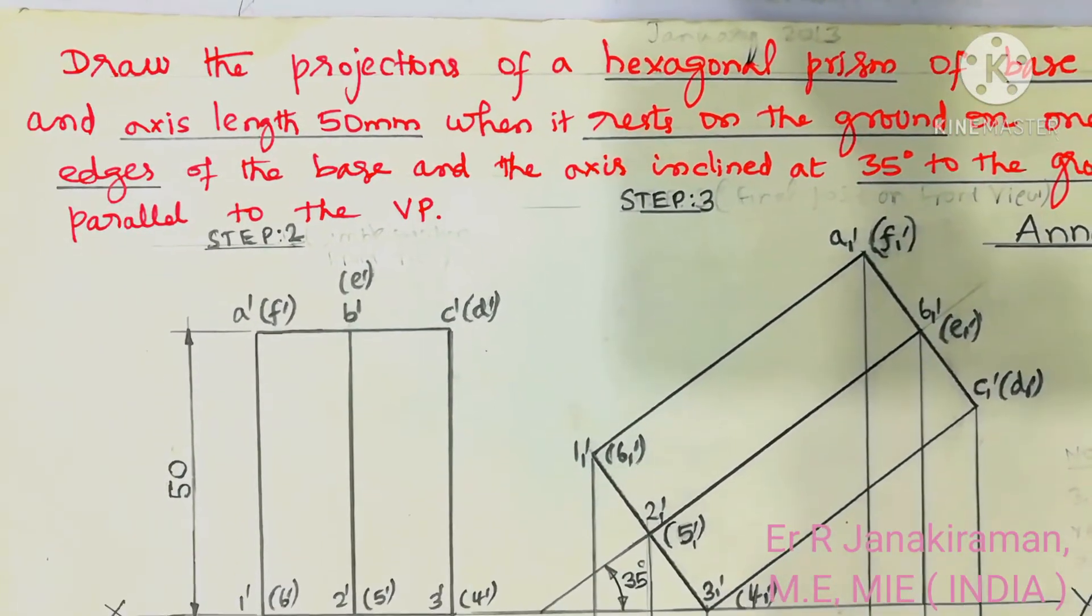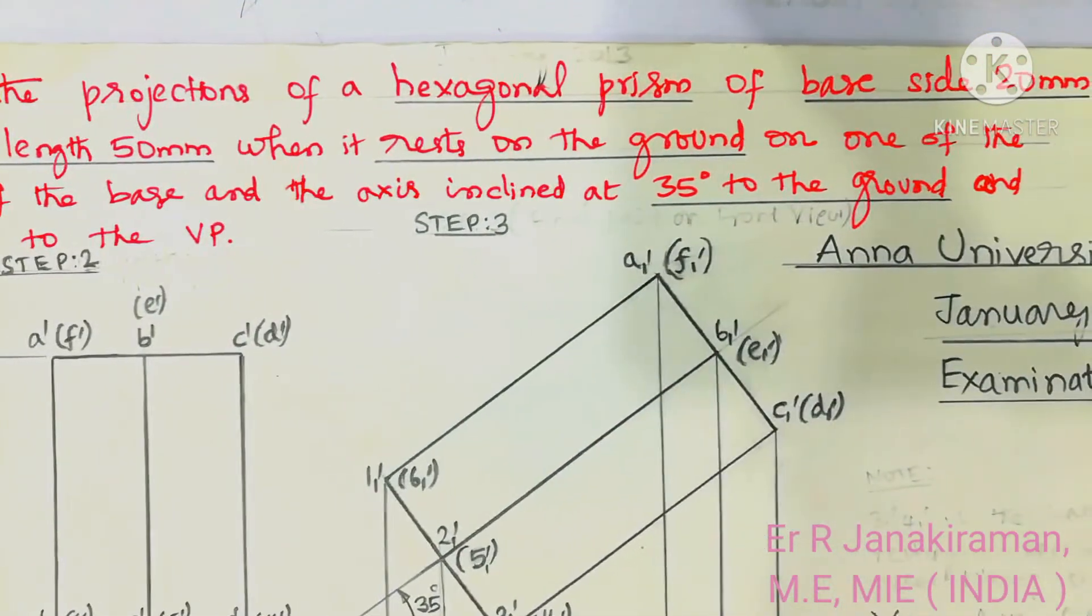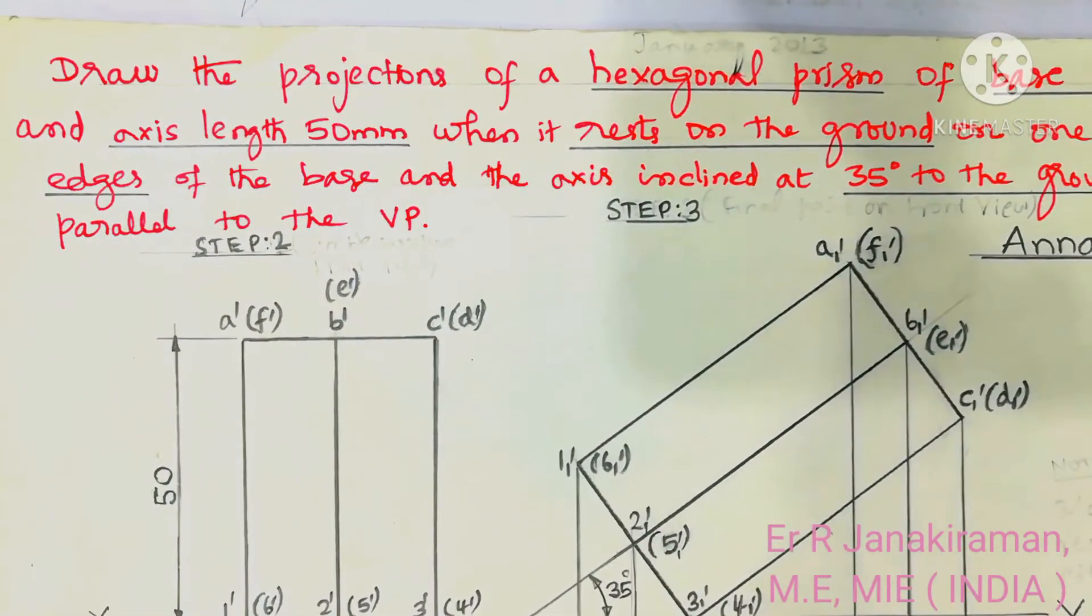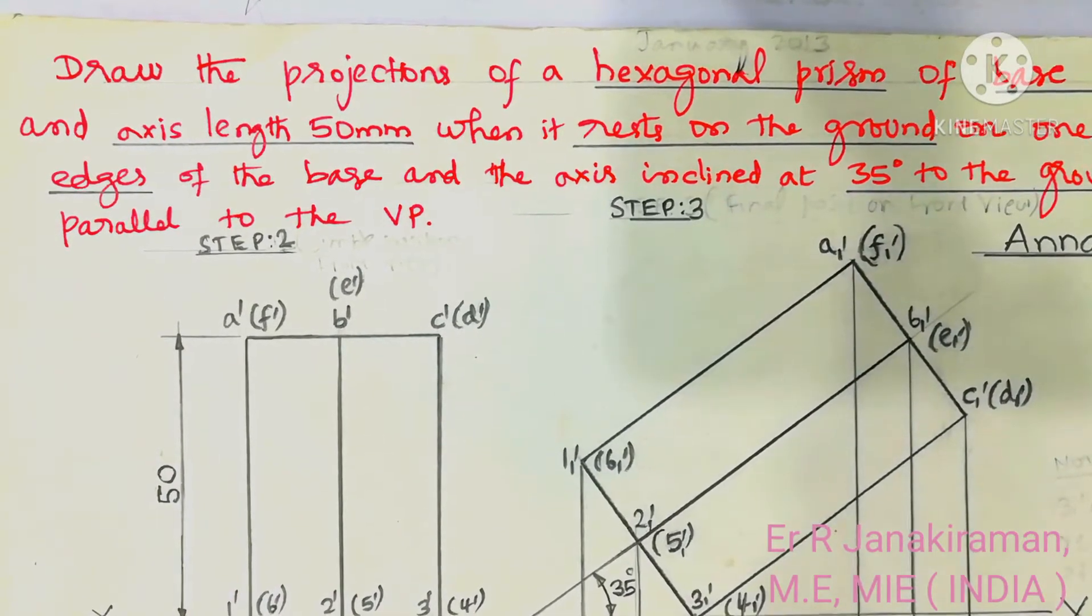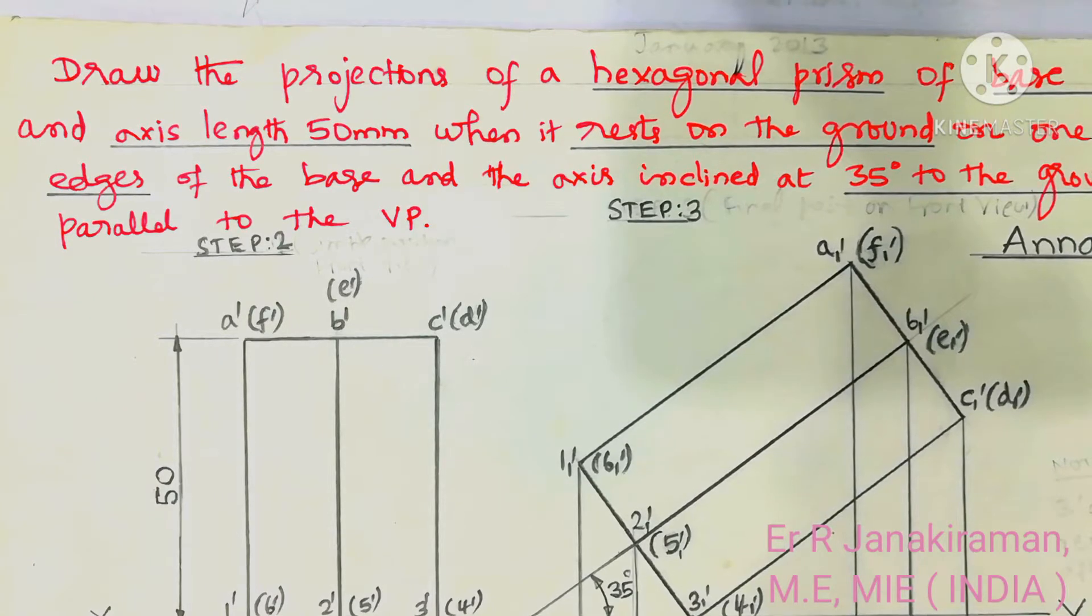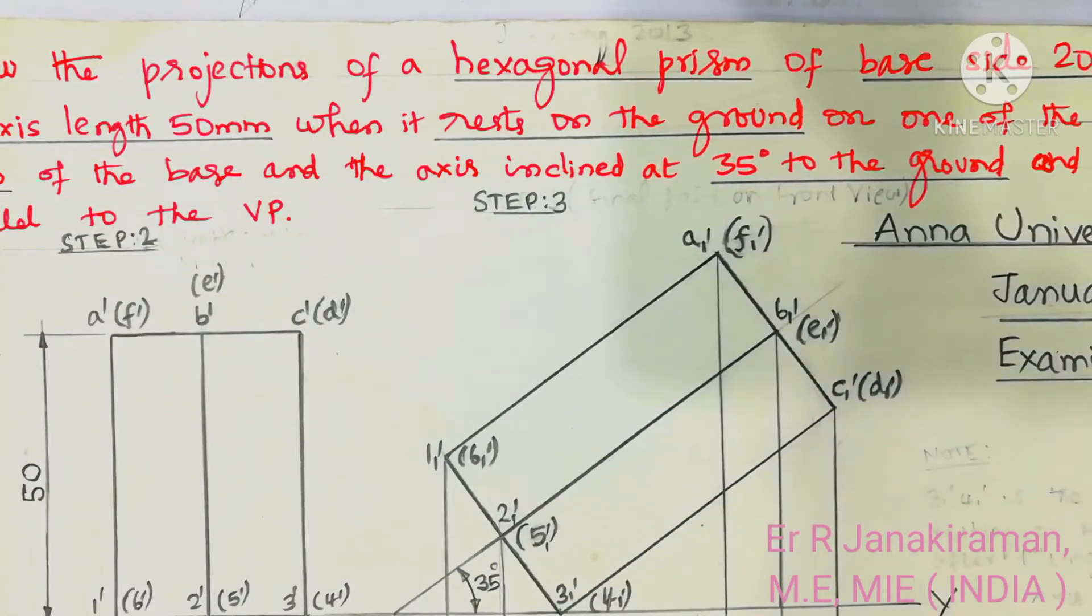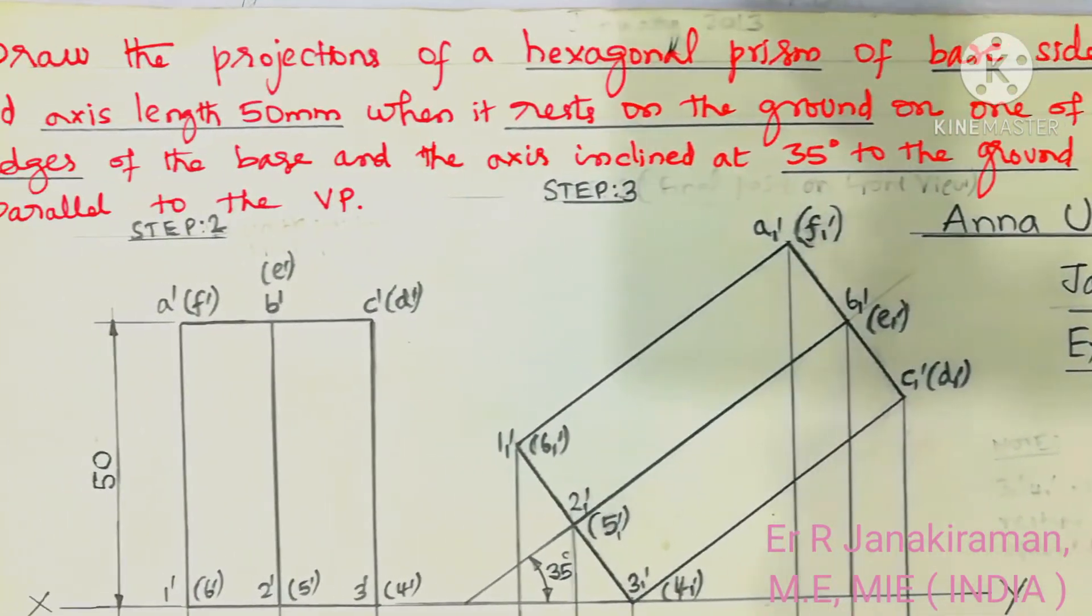Draw the projections of the hexagonal prism of base side 20 mm and axis length 50 mm. When it rests on the ground on one of the base edges, and the axis is inclined at 30 degrees to the ground. Ground now HP, and parallel to the VP.